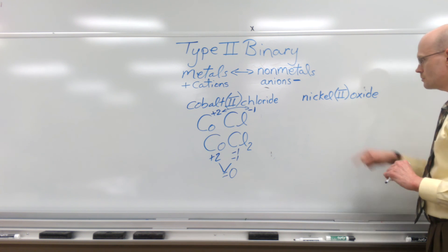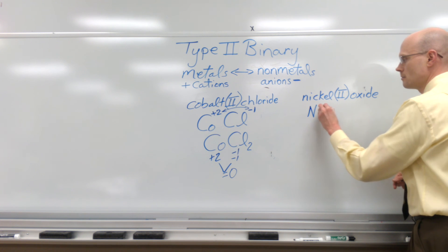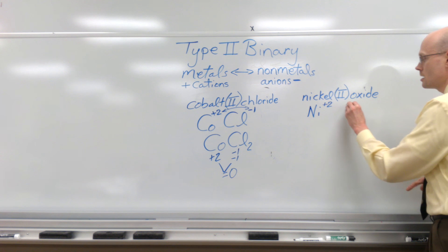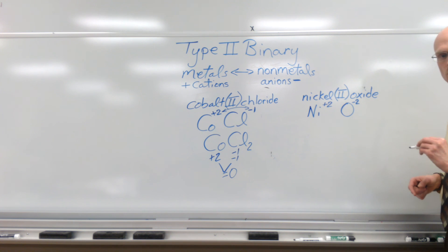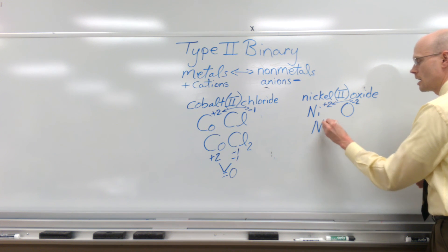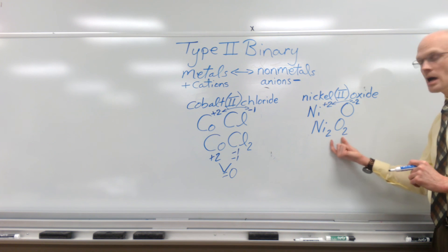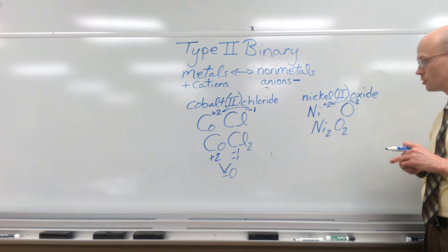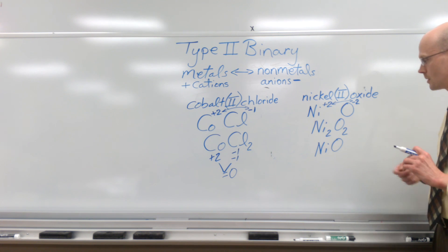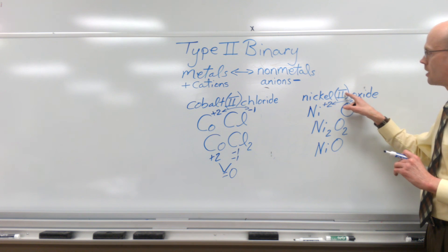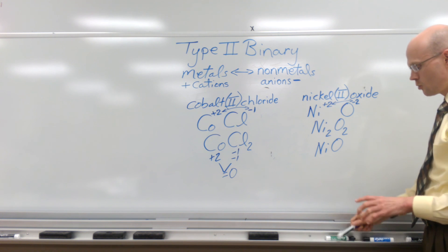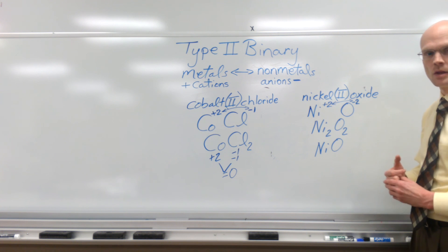For nickel(II) oxide: nickel is Ni, and the Roman numeral tells us nickel carries a +2 charge. Oxide comes from oxygen and carries a −2 charge. Crossing over gives us Ni₂O₂, but we should express ions in their simplest whole-number ratio — 2 to 2 is really a 1 to 1 ratio — so it simplifies to NiO. Nickel(II) oxide is simply NiO, with the II representing the charge on the nickel cation.